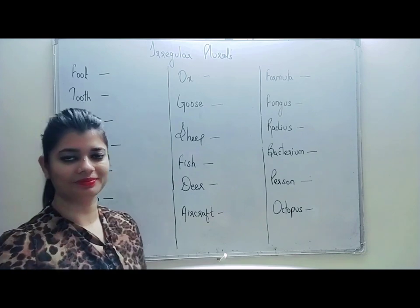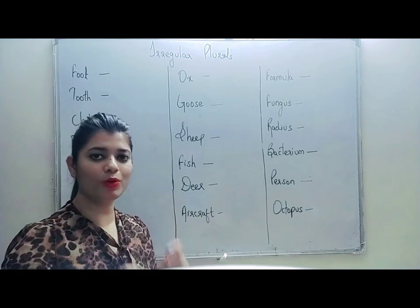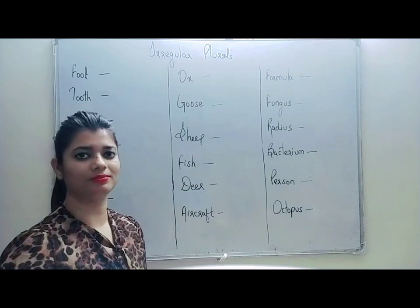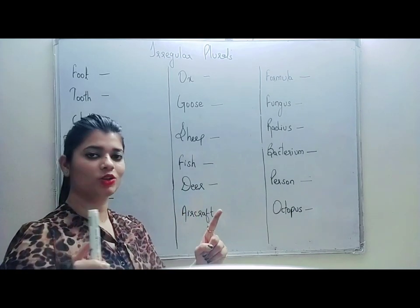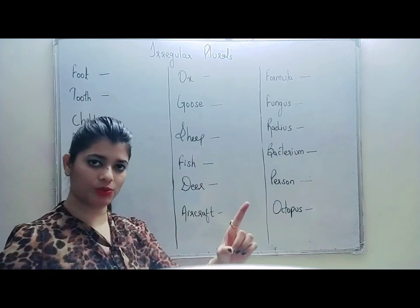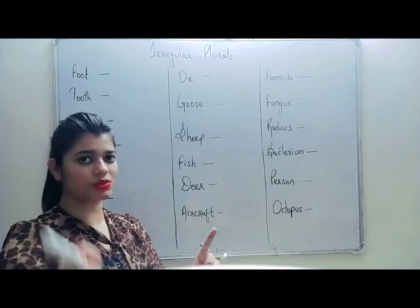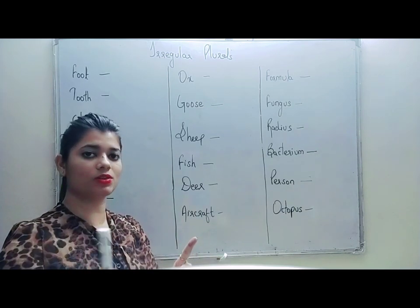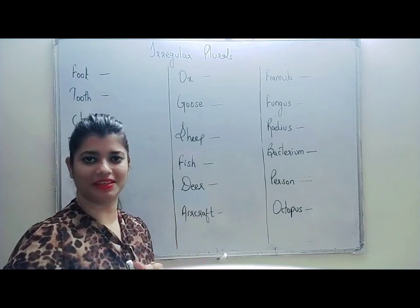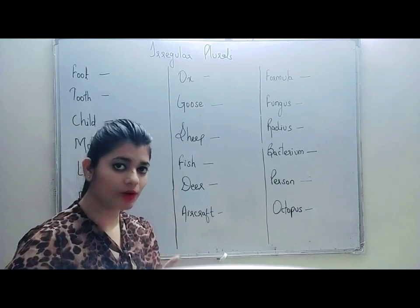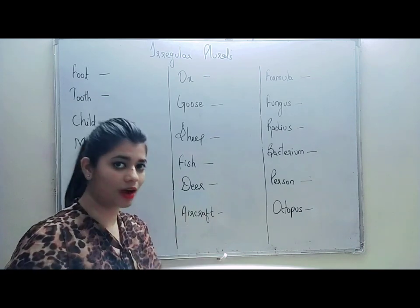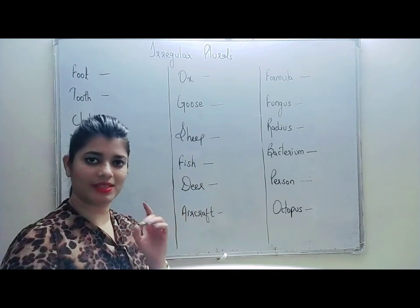Hello everyone, my name is Shweta Gautam and today we are going to see some irregular plural forms. You will have learned singular and plural — if there is one boy, we call him boy, but if there are more, we call them boys. Similarly, one student becomes students. But today's class deals with irregular plurals where people make a lot of mistakes and don't even know they are making them. So without wasting any time, let's begin.